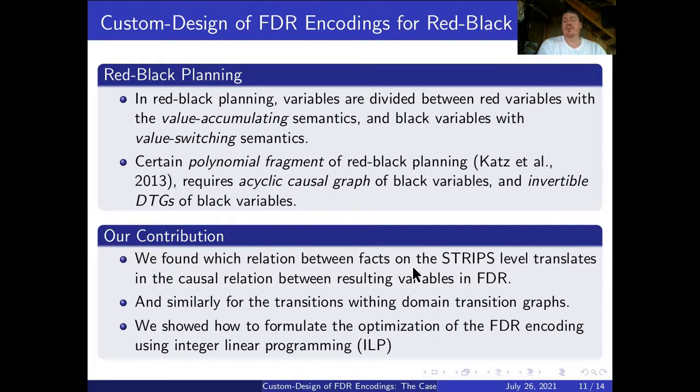Our contribution is that we found a relation between facts on a STRIPS level that translate into the causal relation between variables in FDR, and similarly for the transitions within domain transition graphs. We formulated the optimization of the translation process using integer linear programming that can give us the best possible encoding for a given objective function. Unfortunately, we also found out that we actually don't know the best possible objective function for this red-black planning technique, but this can also motivate future research in this matter.